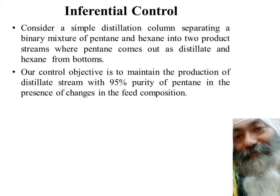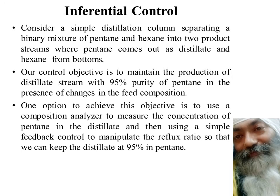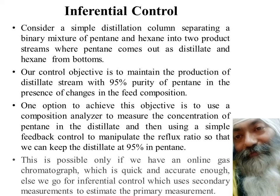We have the control objective of maintaining 95% purity of pentane in spite of changes in feed composition. To achieve this objective, we would normally use a composition analyzer to measure the concentration of pentane in the distillate and use simple feedback control to manipulate the reflux ratio to keep the distillate at the required set point of 95% pentane. However, the issue with this kind of simple feedback control is that normally we do not have online gas chromatographs which are quick as well as accurate enough.